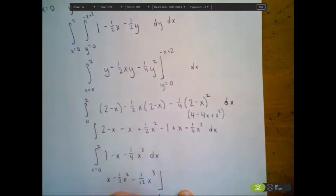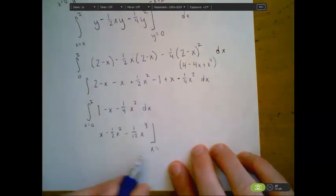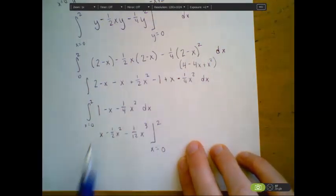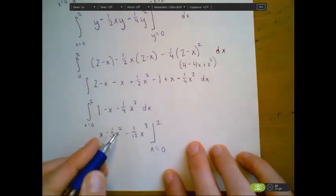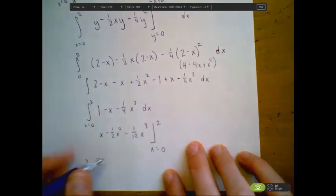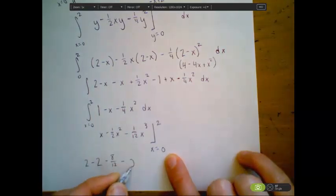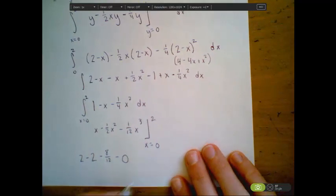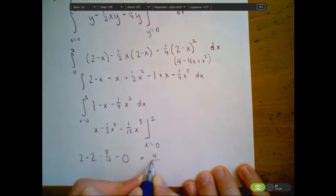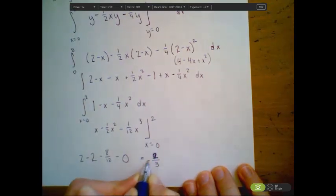Now integrating with respect to x from 0 to 2: 1 becomes x, negative x becomes negative one half x squared, and negative one fourth x squared becomes negative one twelfth x cubed. Evaluating at x equals 2: 2 minus 2 squared over 2 minus 8 twelfths equals 2 minus 2 minus 8 twelfths. Subtracting the value at x equals 0 gives all zeros. The final answer is negative 8 twelfths, which simplifies to negative 2 thirds.